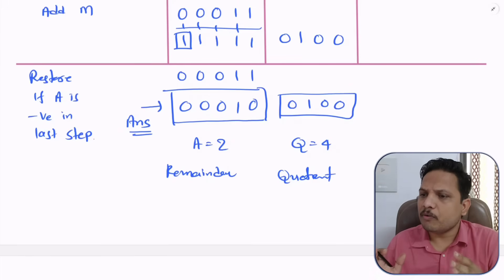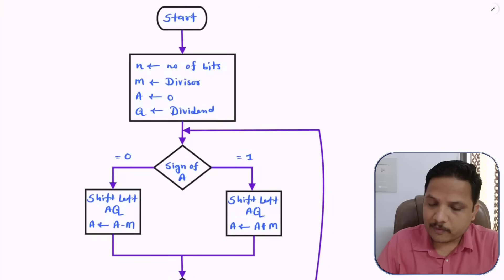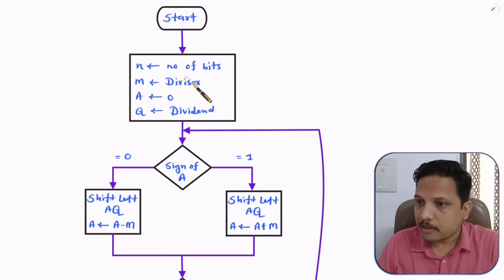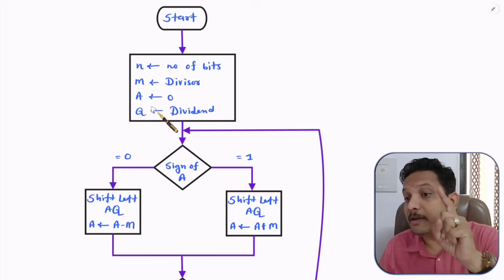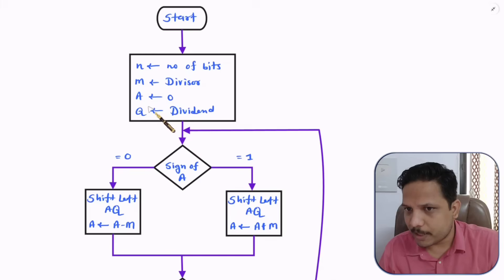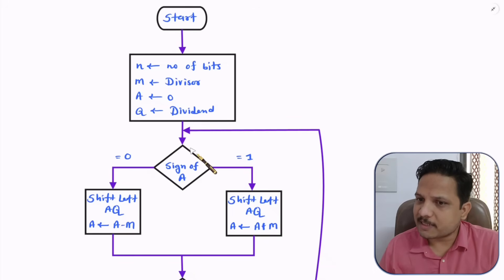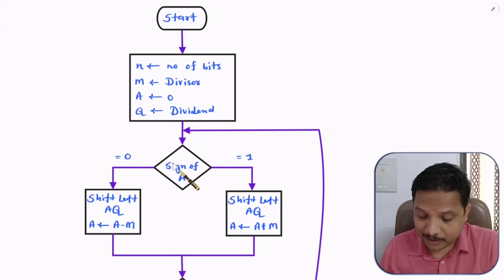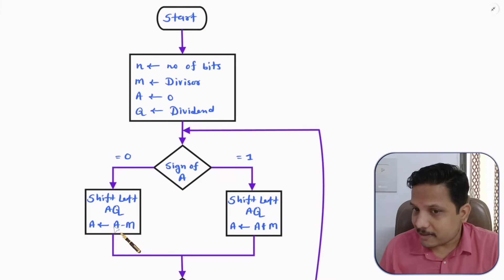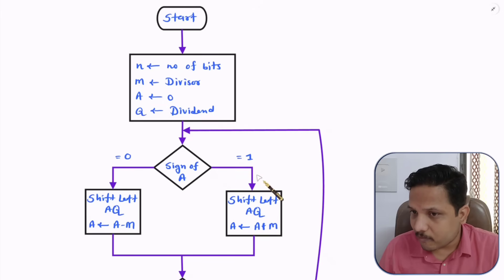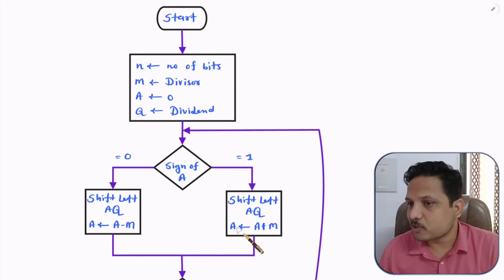Now let me explain the flowchart. First there is a start, then n is the number of bits (determining how many steps), M is the divisor, A is the accumulator initialized to zero with n+1 bits, and Q is the dividend. You perform steps based on the sign of A: if sign of A is 0, first perform shift left, then compute A = A - M.